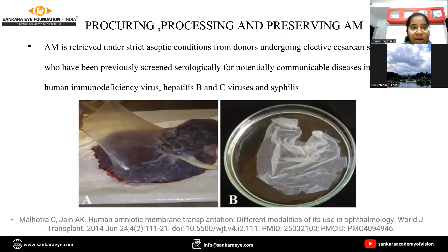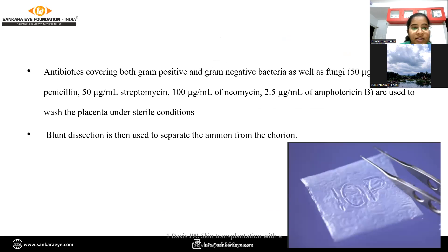Procuring, processing, and preserving amniotic membrane: amniotic membrane is retrieved under strict aseptic conditions by LSCS and is serologically tested for HIV, hepatitis B and C. Antibiotics covering both gram-positive, gram-negative bacteria and fungi are used to wash the placenta under sterile conditions. It contains 50 micrograms per ml of penicillin and streptomycin, 100 micrograms per ml of neomycin, and 2.5 micrograms per ml of amphotericin.